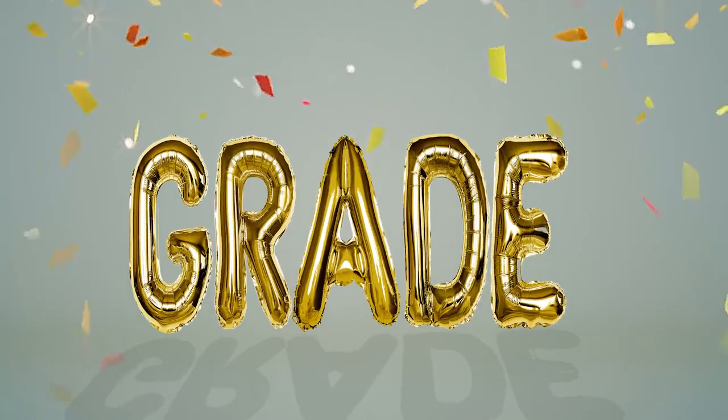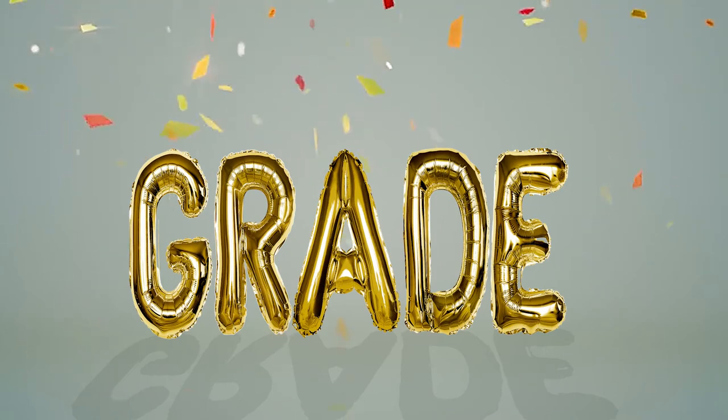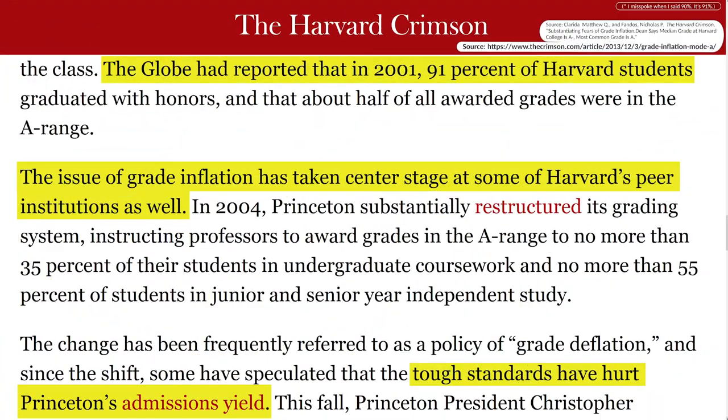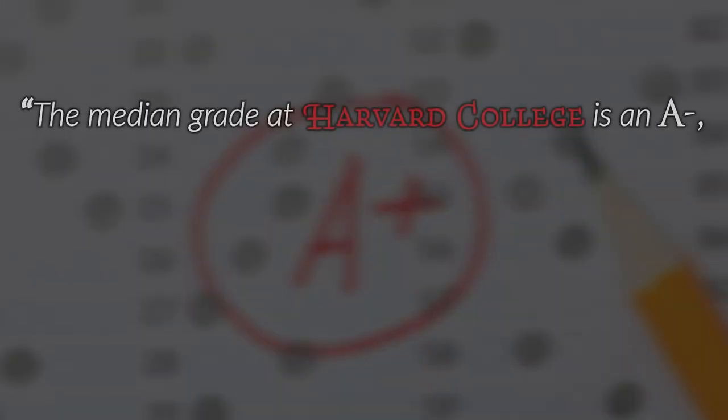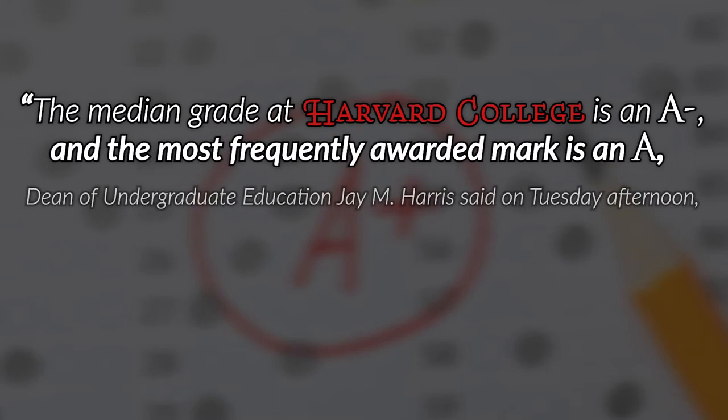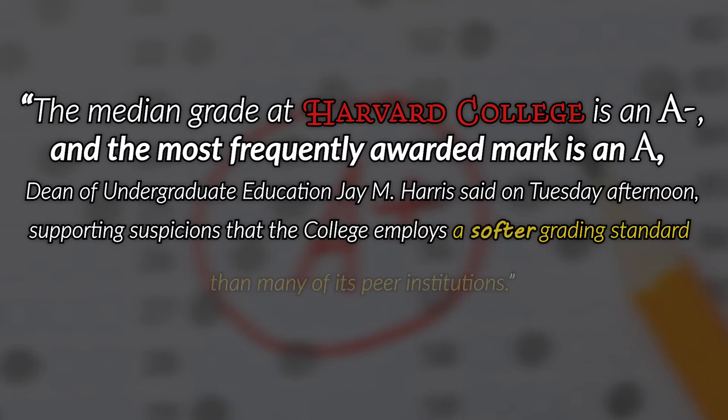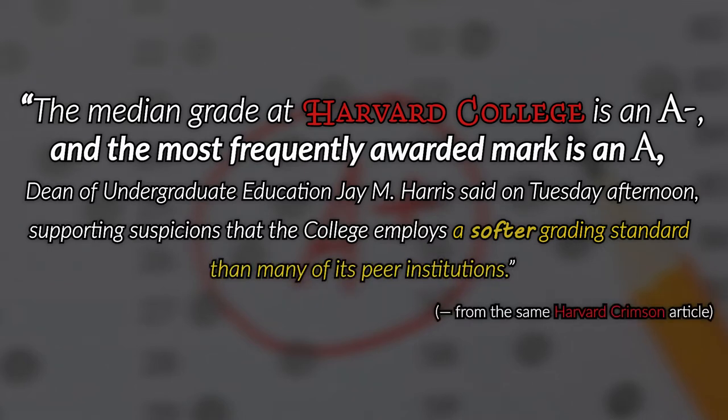Such as grade inflation. Grade inflation is never mentioned in the film. And it's also a huge problem and skews things. For example, in 2001, so many of Harvard students were given A grades that 90% of them graduated with honors. Grade inflation is still a big problem too. As The Crimson noted in 2013, which is a newspaper run by Harvard undergrads, the median grade at Harvard College is an A-, and the most frequently awarded mark is an A. Dean of Undergraduate Education J.M. Harris said on Tuesday afternoon, supporting suspicions that the college employs a softer grading standard than many of its peer institutions.